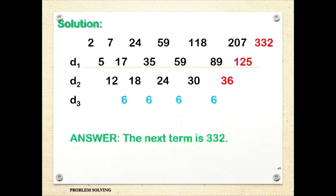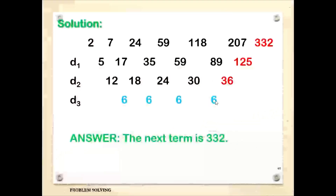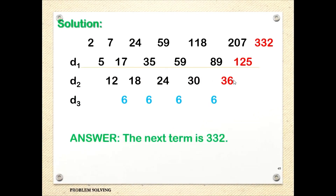Going up: 30 plus 6 gives 36. Then 89 plus 36 gives 125. And 207 plus 125 is 332. So the next term is 332.